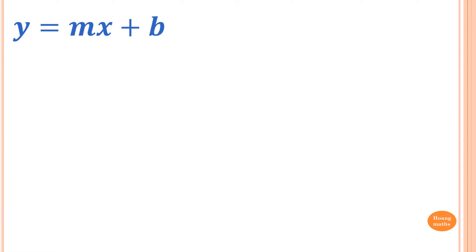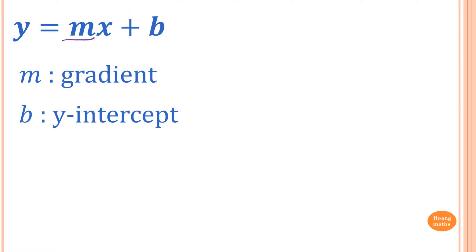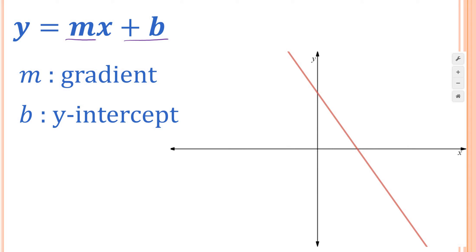y equals mx plus b — m is the gradient, b is the y-intercept. If you look at the equation, it tells you the gradient and the y-intercept, that's why we call it gradient-intercept form. Looking at the graph, the y-intercept is here at b. We're going to use gradient and y-intercept to graph a straight line.